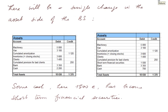Here is the impact on the balance sheet. There will be a simple change in the asset side of the balance sheet and that's it. Here are the assets before, with 2,200 euros of cash and no short-term financial securities. After this transaction, if we spent 1,500 euros of cash into short-term financial securities, the cash now becomes 700 euros, and we have a new account on the asset side of the balance sheet: 1,500 euros in short-term financial securities, mostly government bonds.